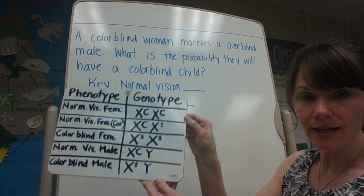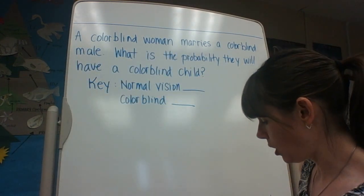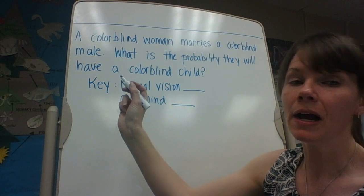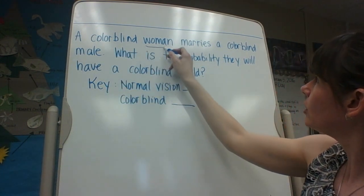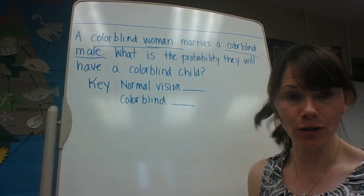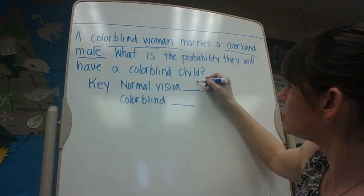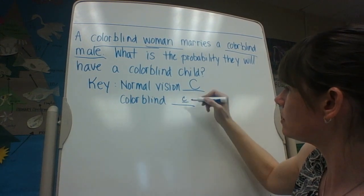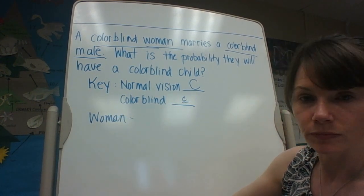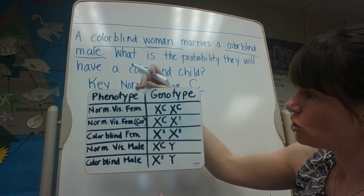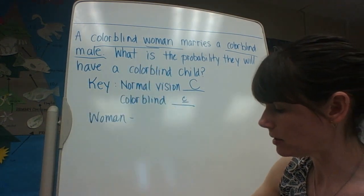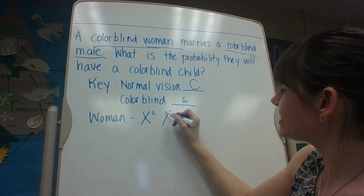For the next problem we'll use the same key. A colorblind woman marries a colorblind male — what is the probability they will have a colorblind child? A woman with colorblindness is going to have two defective recessive alleles on her X's, so she's going to be X little c, X little c.